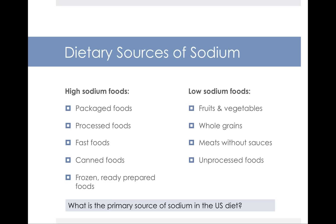Think about going to a fast food restaurant — you might not sprinkle salt onto your taco, but there's salt in the taco shell, in the meat, in the beans, in the cheese, and in the salsa. So the primary sources of sodium in the US diet are packaged, processed, fast foods, canned foods, and frozen foods.